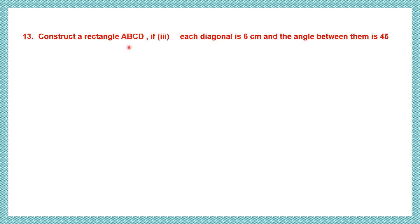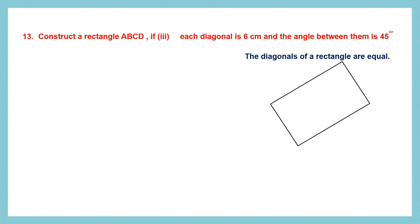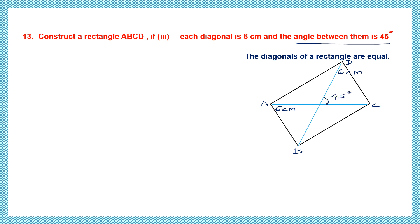In question 3, we're going to construct a rectangle ABCD such that each diagonal is 6 centimeters and the angle between the diagonals is 45 degrees. Let's draw a rough figure. Now we have to remember that the diagonals of a rectangle are equal. We have drawn it in this way because we're going to take the diagonal as the base. So diagonal AC is going to be our base and is 6 centimeters. The other diagonal BD is also 6 centimeters. The angle between them is 45 degrees.